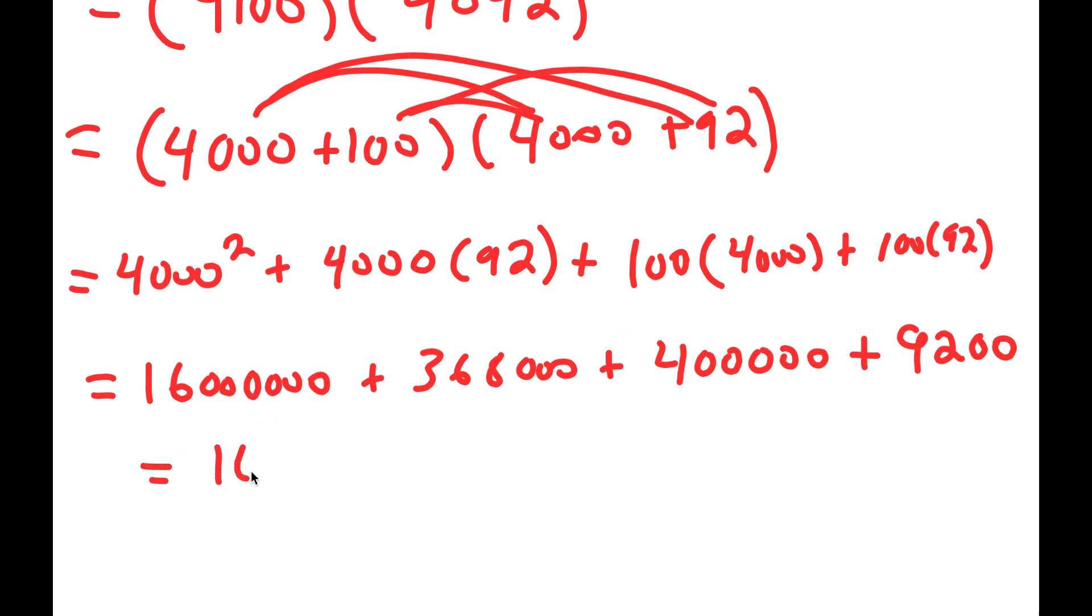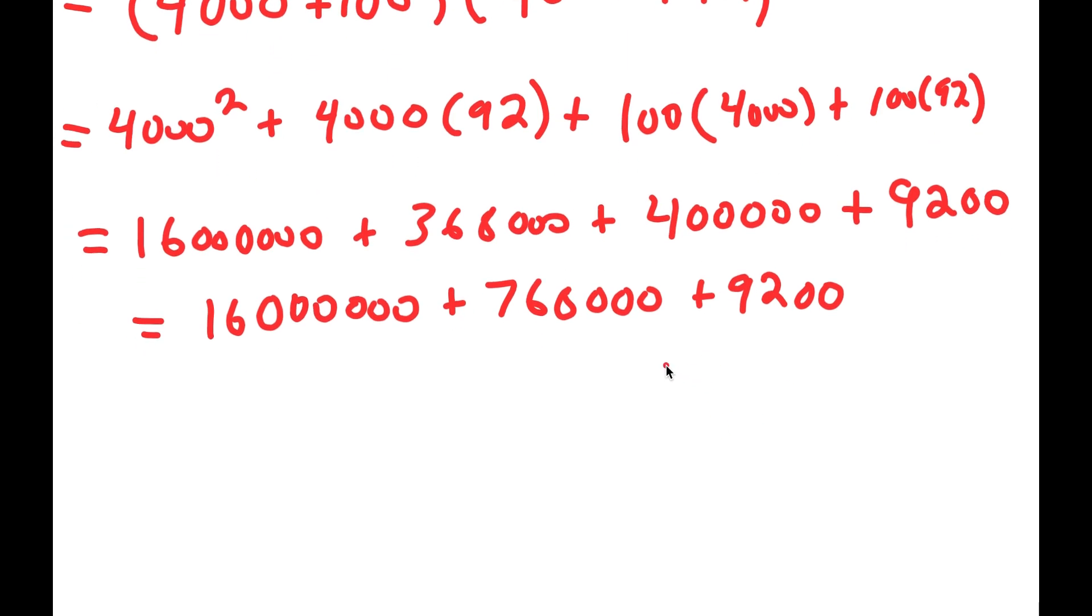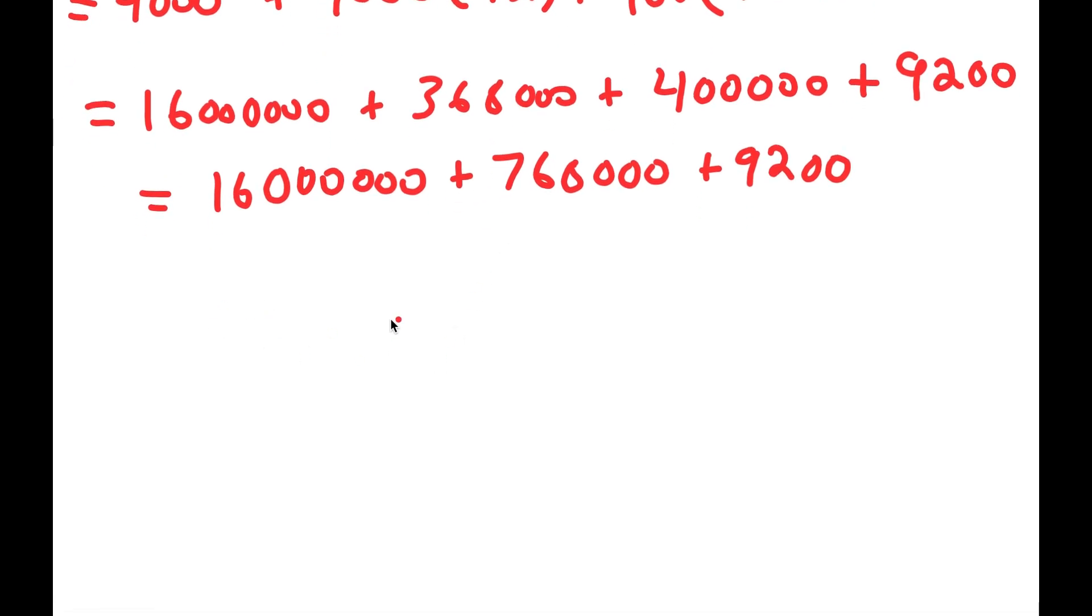Now, this is equal to 16,000,000 plus 368,000 plus 400,000 is 768,000, and I have this plus 9200. And this is all equal to, I have 16,000,000 plus 768,000 plus 9200.